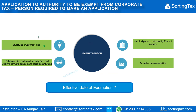Four forms of organization are not automatically exempt but are required to make an application. Once the application is approved by the UAE tax authorities, they become eligible for exemption. These four are: a qualifying investment fund; a public pension and social security fund; a qualifying private pension and social security fund; a juridical person controlled by an exempt person; or any other specified person.